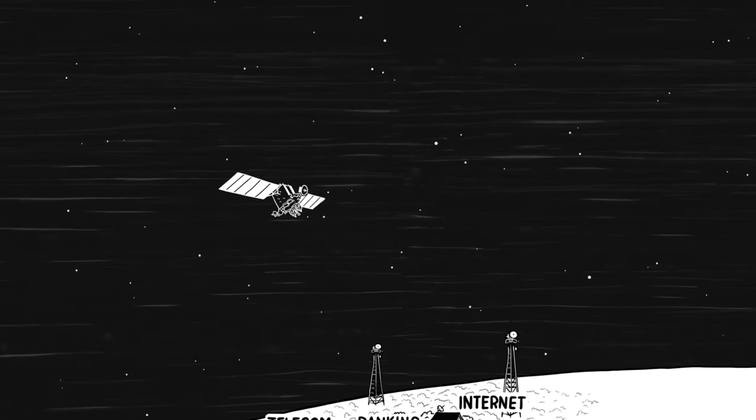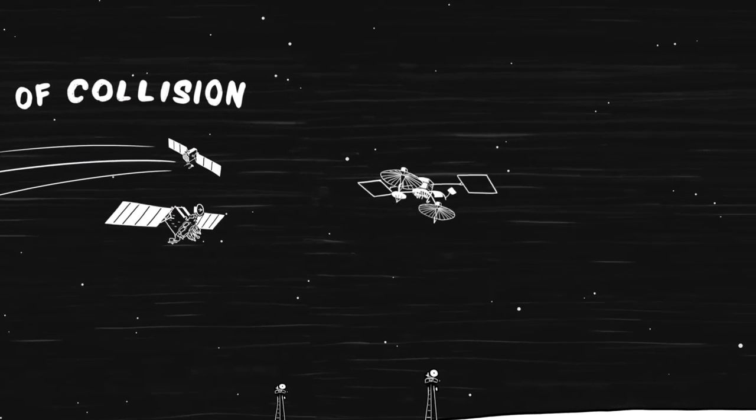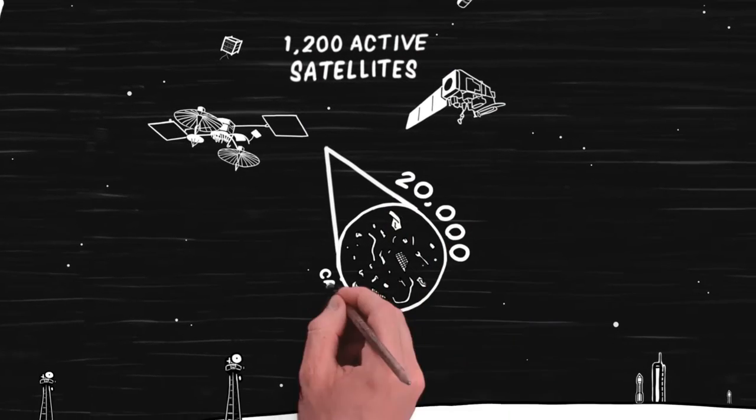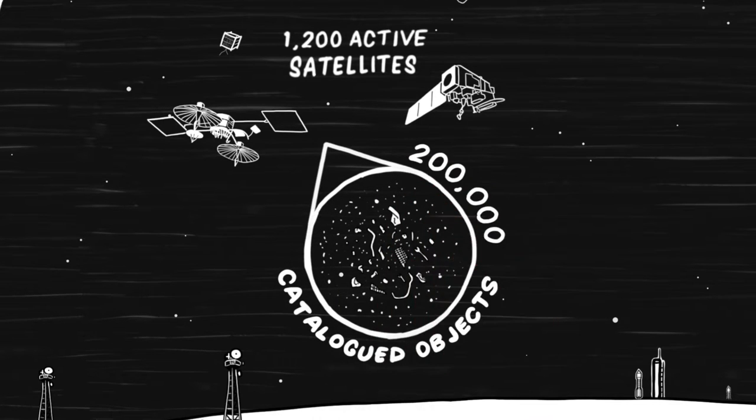As we become more reliant on satellites, the risk of collisions is also increasing. There are currently about 1,200 active satellites and around 20,000 catalogued objects 10 centimeters or larger orbiting Earth. The catalog is expected to grow to 200,000 when we can detect debris down to 2 centimeters.